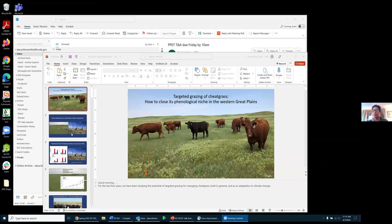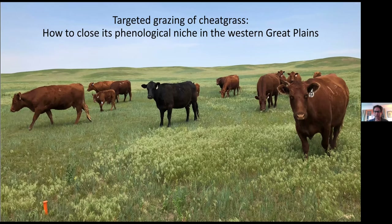For the last four years or so we have been studying early season targeted grazing of cheatgrass as a way both of controlling cheatgrass in general and as a way of adapting to climate change. Before getting into that I want to back up in time a little bit and tell you about how we got into this work — it started in 2011 when we first started studying cheatgrass in the Prairie Heating and CO2 Enrichment study.